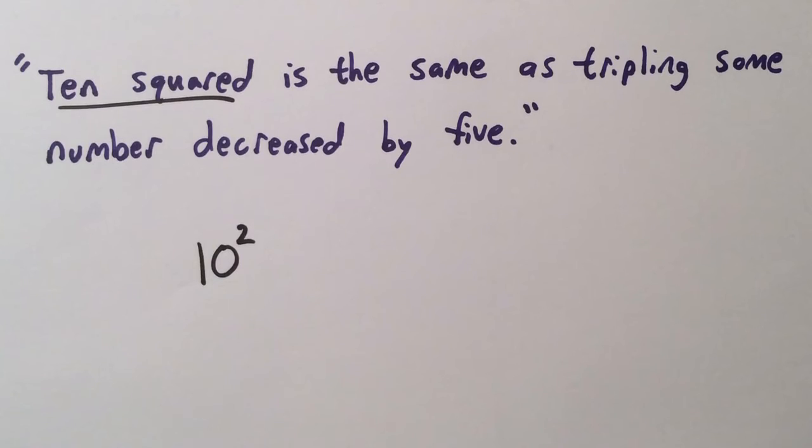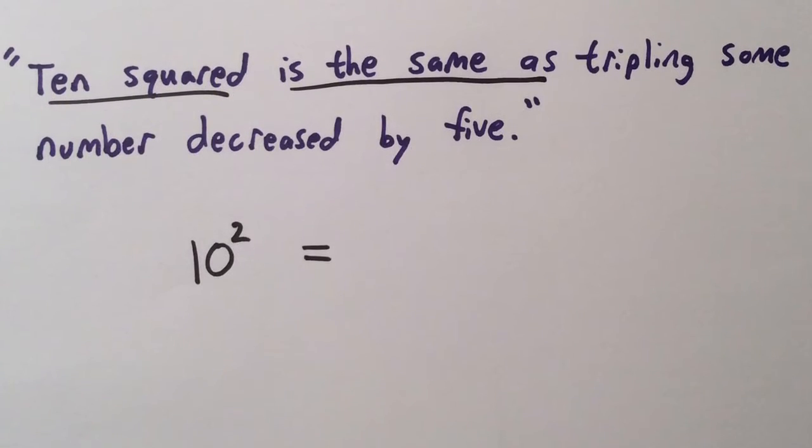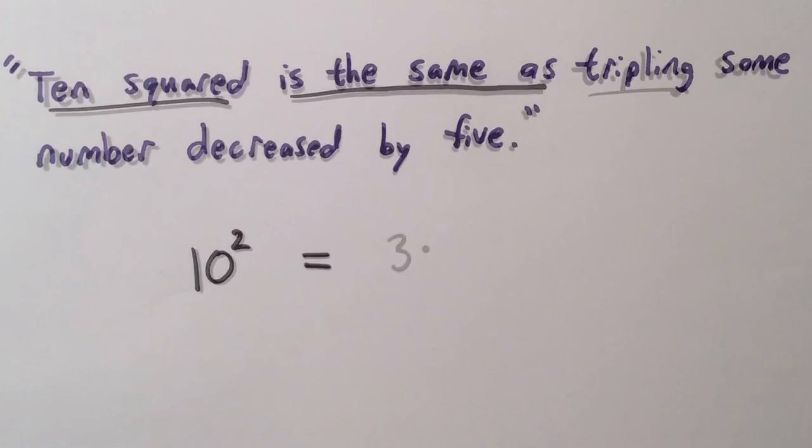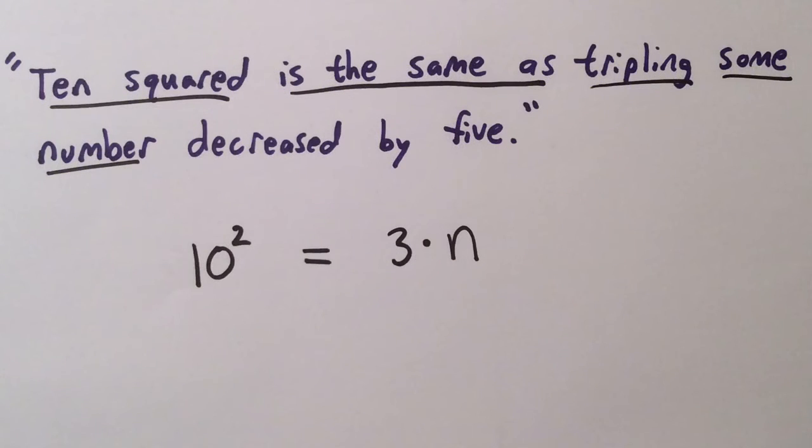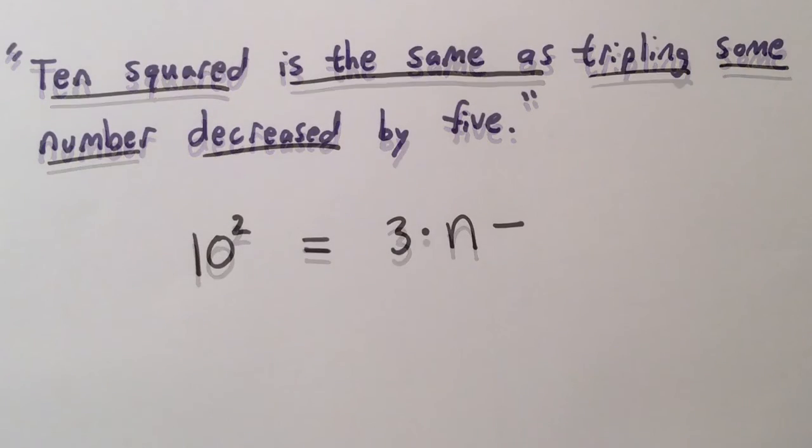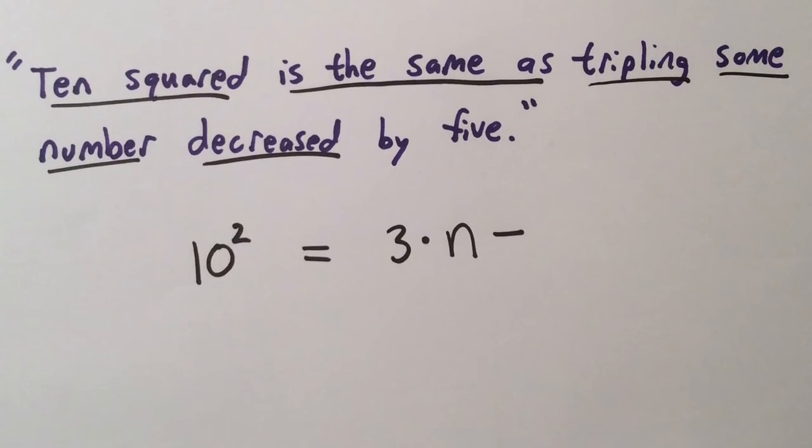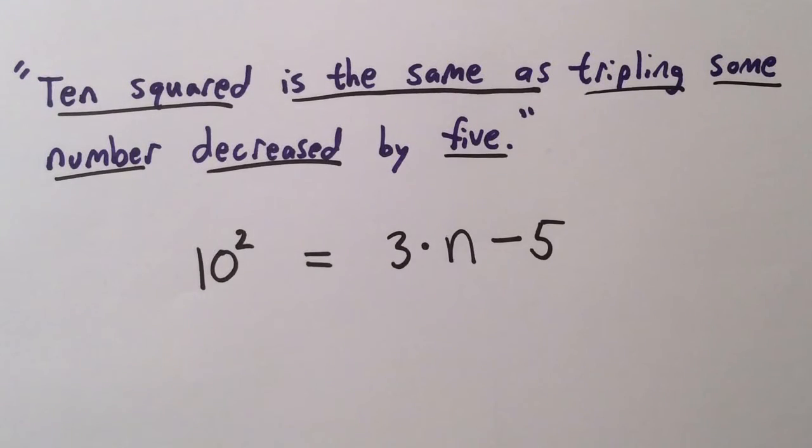10 squared refers to 10 with an exponent of 2. Is the same as means equal. Tripling means to multiply by 3. Some number is represented by a variable like n. Decrease means to subtract. And of course, 5 means 5.